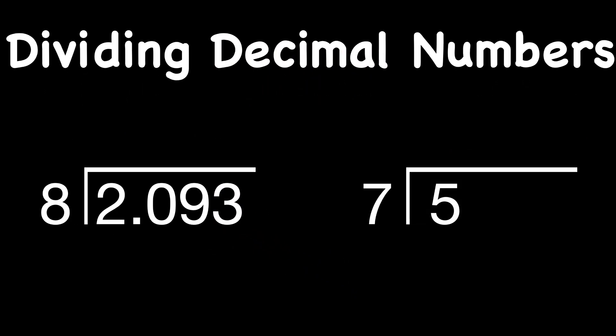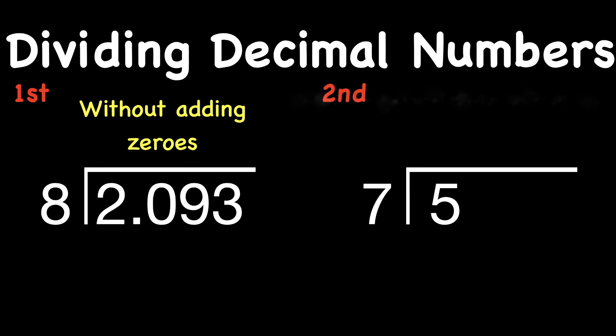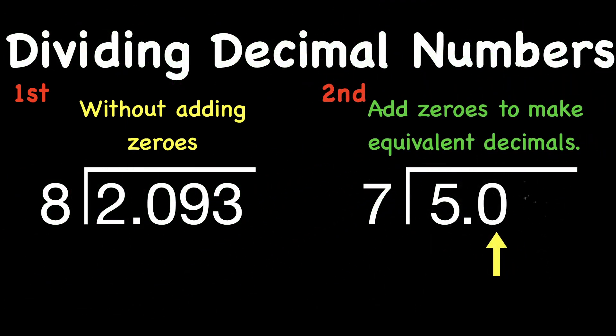We're only going to do two problems. The first problem will be without adding any zeros to our dividend. The second problem involves a few more steps where we will have to add zeros to make equivalent decimals. Okay, so let's start.